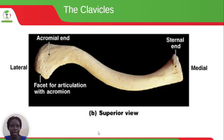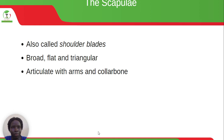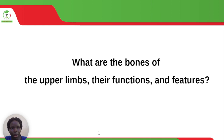The clavicles, also called the collarbones, are long and S-shaped. They originate at the manubrium at the sternum end, and articulate with the scapulae at the acromial end. The scapulae, also called the shoulder blades, are broad, flat and triangular, and articulate with the arms and the collarbones. A picture shows the different parts of the scapulae.